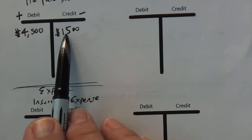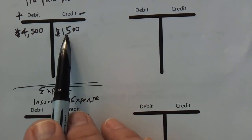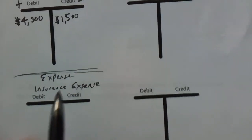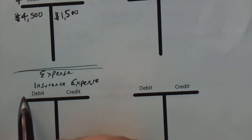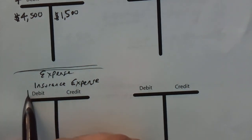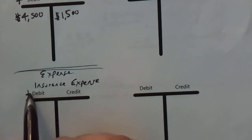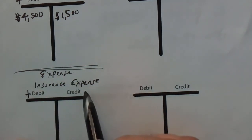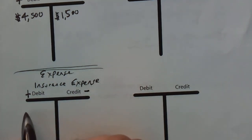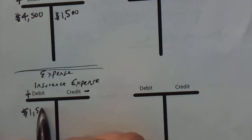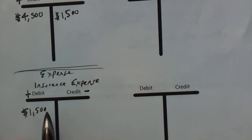In other words, we've reduced it. Our asset has gone down. But because this is an expense, expenses are increased with debits and decreased with credits. So I'm going to debit $1,500 to our insurance expense.